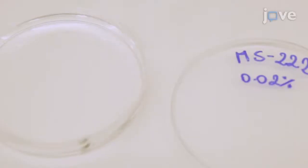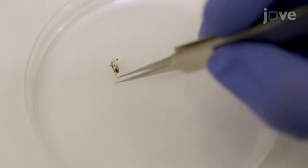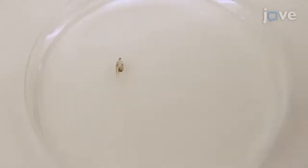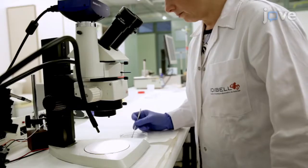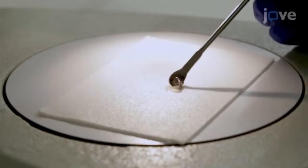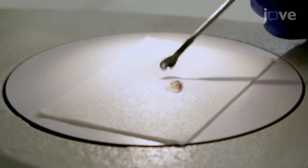Check for proper anesthetization by the absence of a reaction to mechanical stimuli applied at the tail level using tweezers. Place the anesthetized tadpole on the filter paper under the scope. Position the animal with its dorsal side facing upward so brain structures can be visualized.